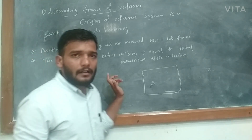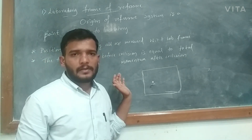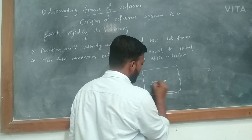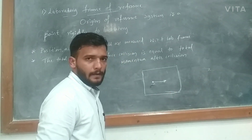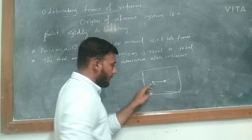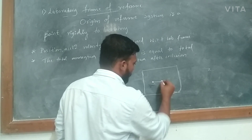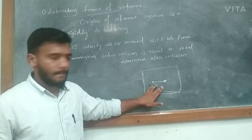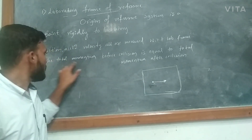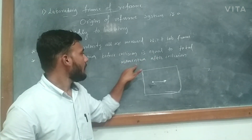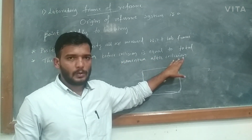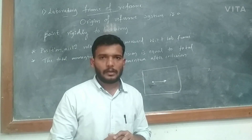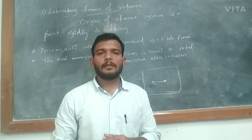We are already learning conservation laws. Here, one particle collides with another particle. The collision of these two particles takes place, and before and after collision, the momentum will be the same. So, the total momentum before collision is equal to the total momentum after collision. This is also measured with the help of the laboratory frame of reference.